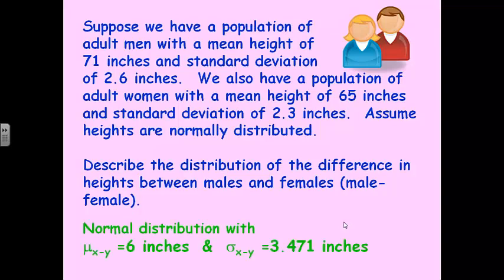In order to do that, you would first think: men's heights are normally distributed, women's heights are normally distributed — therefore, men minus women is going to be normally distributed. So the shape is a normal distribution. The center would be the mean; means behave the way we'd expect, so if we're subtracting, we just subtract: 71 minus 65, there you go. Standard deviations — that's your spread — they don't behave the way we'd expect. We can't just subtract them; instead, we have to square them, add them together, and take the square root.